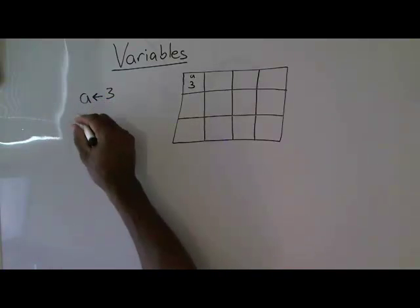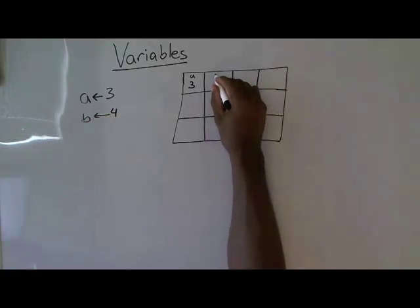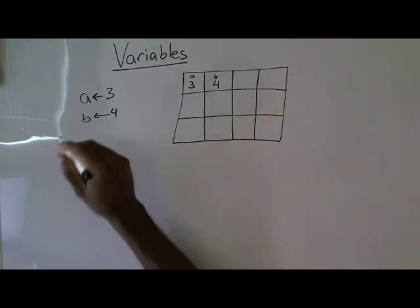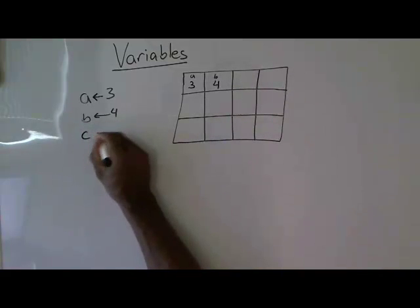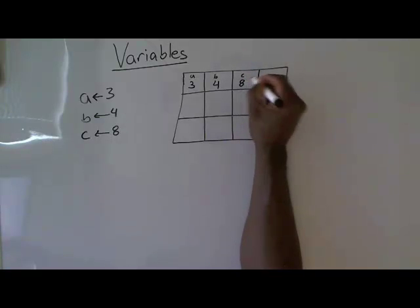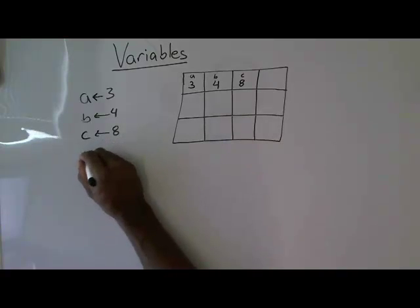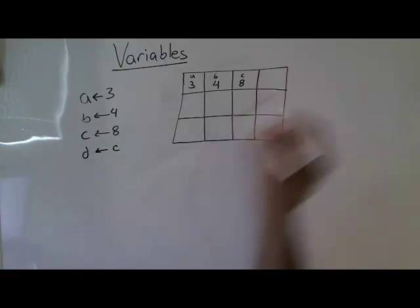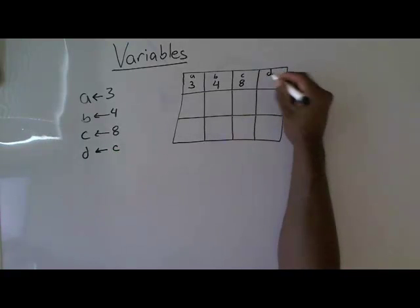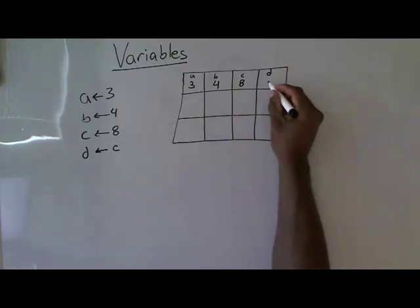I could also call it memory location, I could do a memory location B, and that could get the value 4. So B gets the value 4. And I can do C gets the value 8. Now, I can do things like D gets C, which means memory location D gets the value that was stored in the memory location C, which is 8.